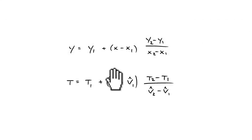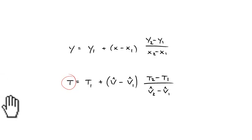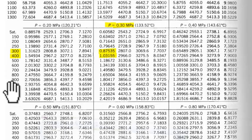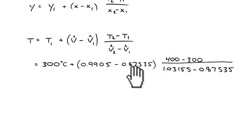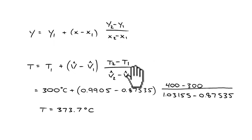Using linear interpolation with T1 = 300°C, T2 = 400°C, v1 = 0.87535 m³/kg, and v2 = 1.03155 m³/kg, we solve for the temperature at our specific volume of 0.9905. Plugging in the numbers gives a final temperature of approximately 374 degrees C.